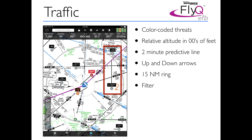Looking at the target that says plus 25 in the red highlight box: 25 means it's 2,500 feet above us — above because of the plus sign. A minus would mean it's below us. There's also a line coming out from each target representing where that aircraft is predicted to be at its current speed in 2 minutes. The one at plus 25 has a short line, while the one at plus 163 — 16,300 feet above us — has a very long line, indicating it's moving much faster.